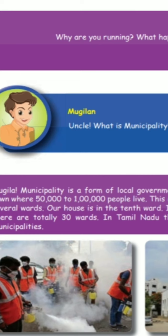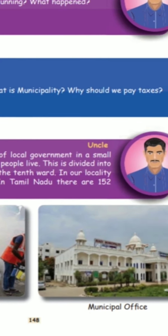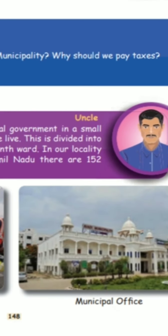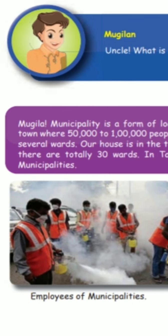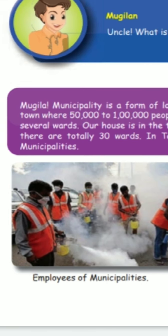In our locality we are living in Avadi. In Avadi there are 42 or 48 wards. Our area is also in one of the first or second wards. The wards are divided to maintain order under the municipalities. In Avadi there is a municipality office — a white building near our Avadi market. Similarly, in our Avadi there is one office maintaining all 42 or 48 wards.